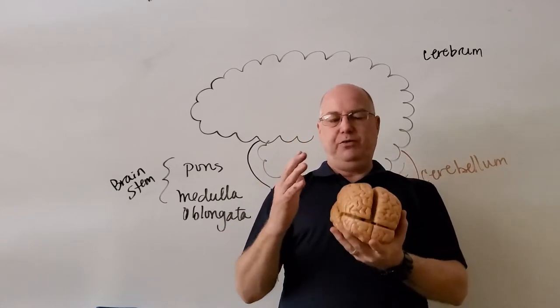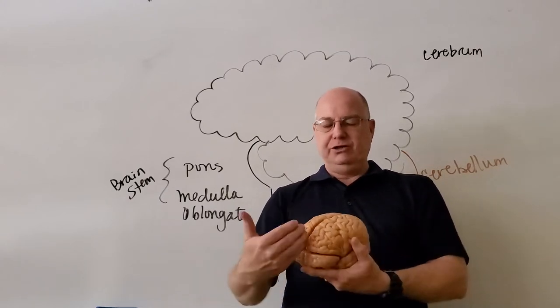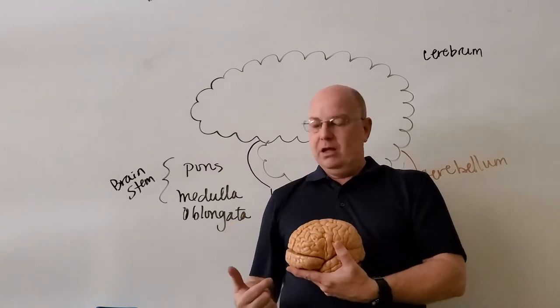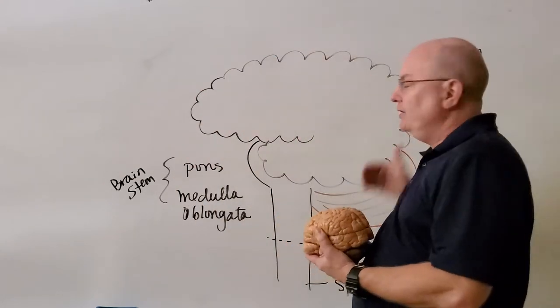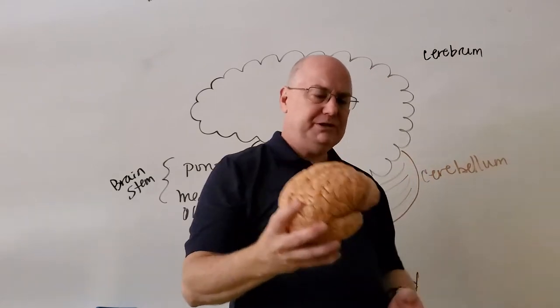That groove that separates the cerebrum into two hemispheres is referred to as the longitudinal fissure, because it runs the length of the brain. I can't see the longitudinal fissure here, but it's an important structure, or a landmark. Let me set this model down.